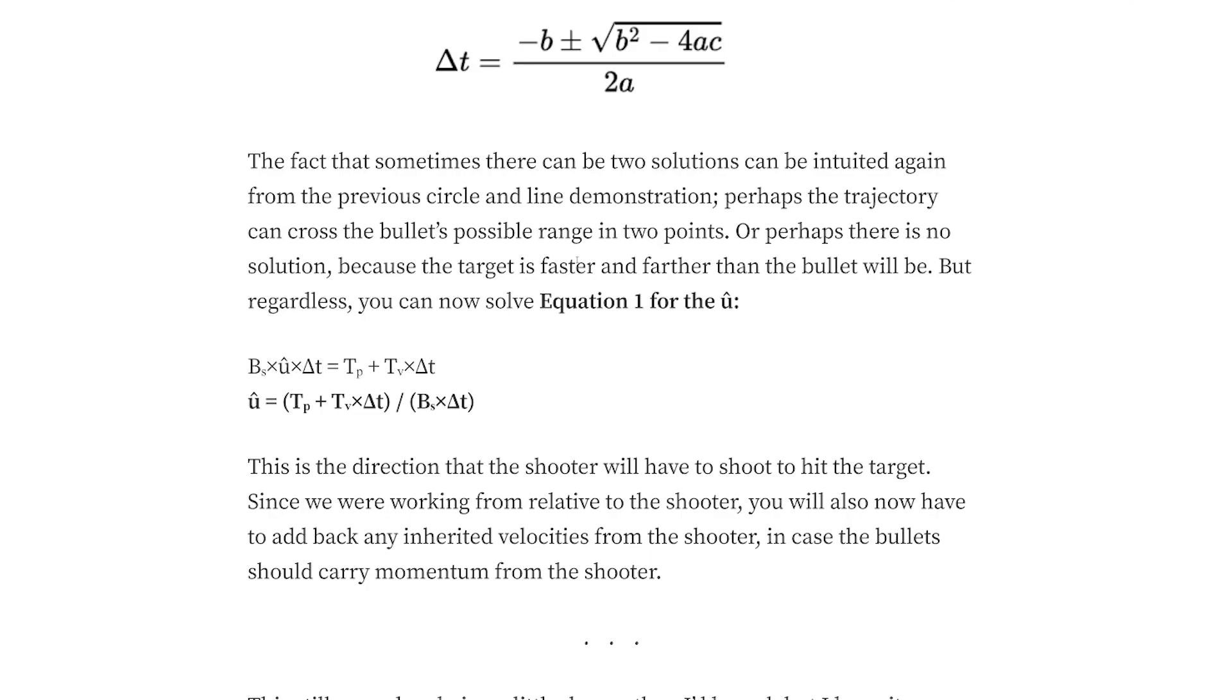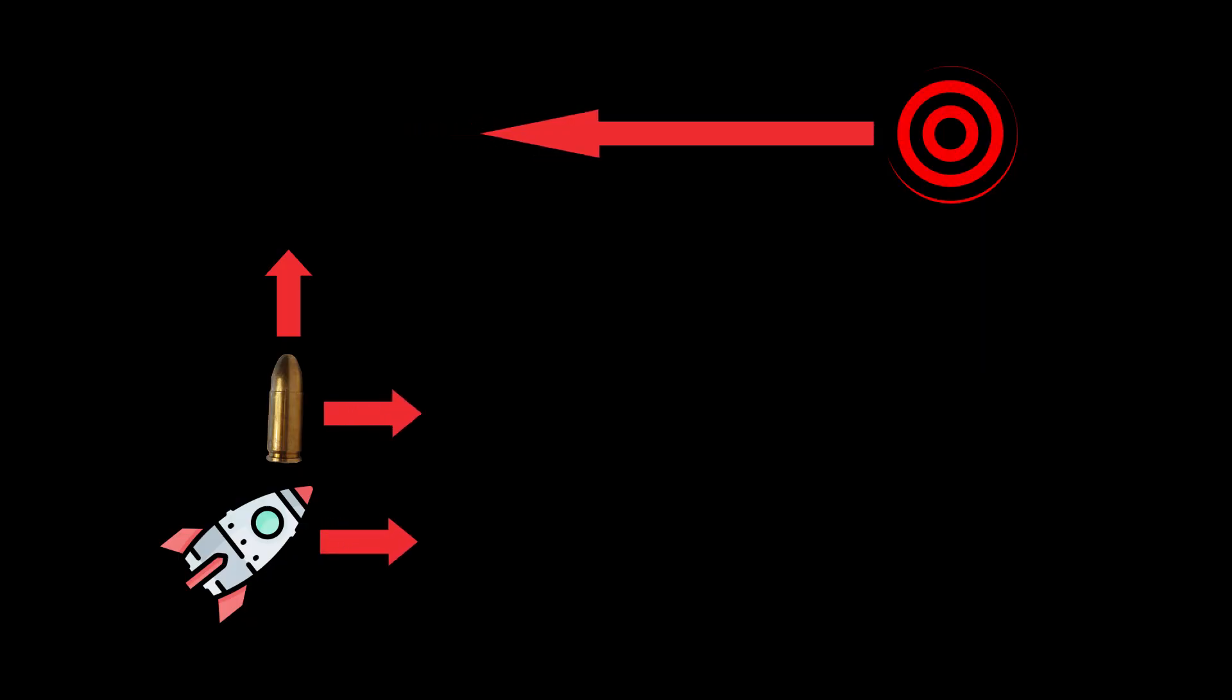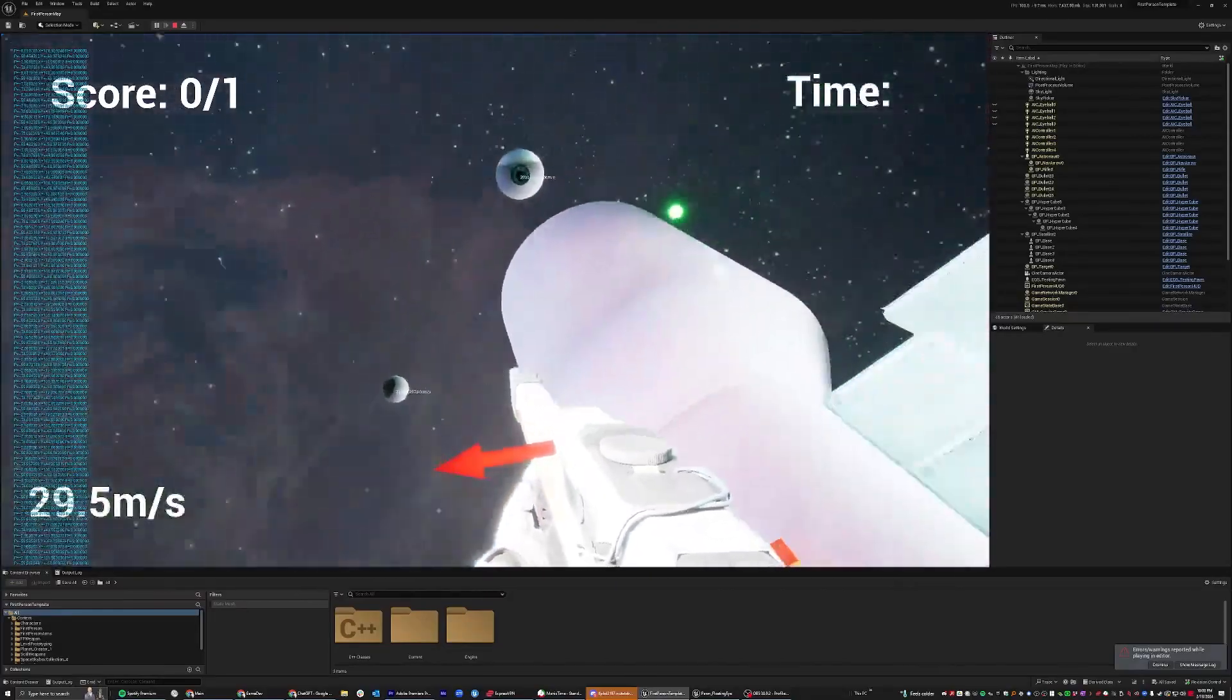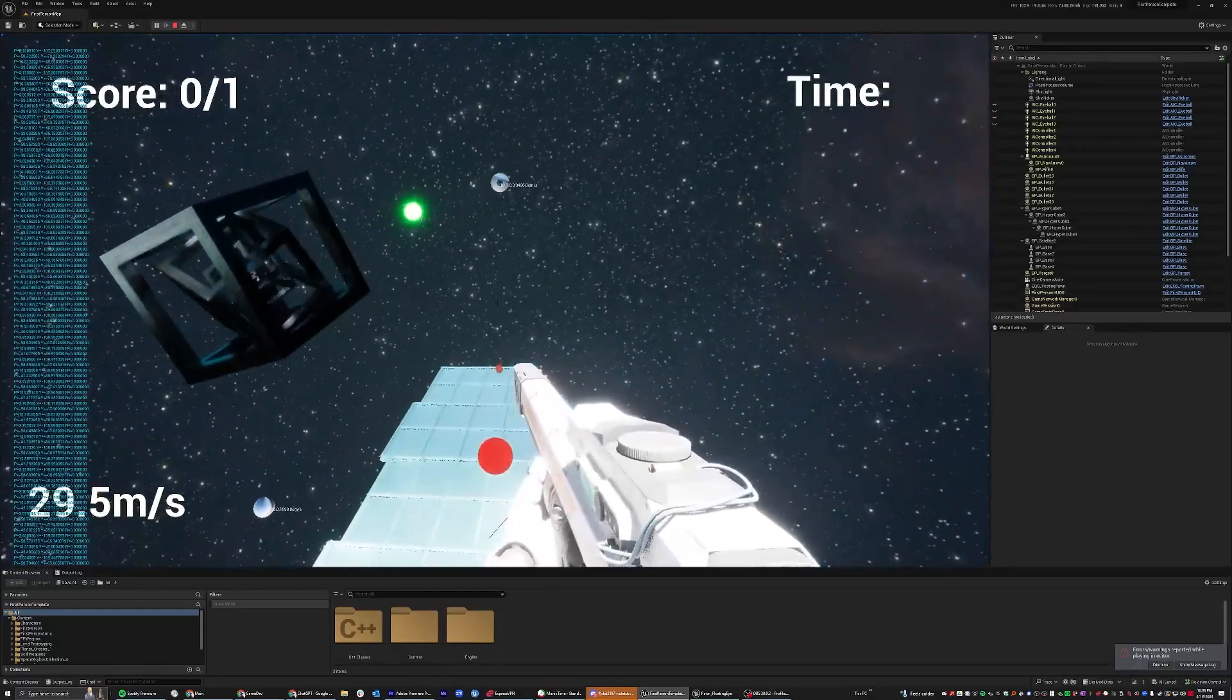And once you have time, you're going to be able to substitute it back into our original equations and solve for that unit vector. You're going to have to remember to add the velocity of the shooter back to the bullet to make it all work correctly. And after that, your AIs should be able to shoot at you and hit you no matter how fast you or they are moving.